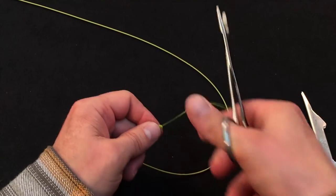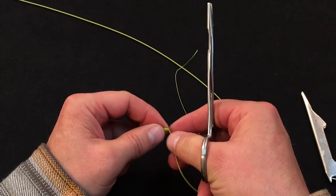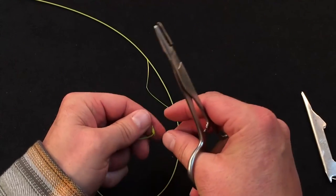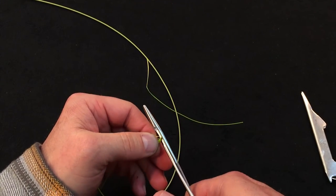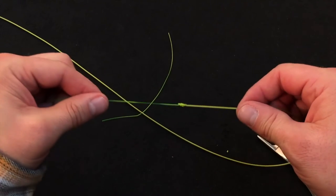We'll come back in, trim the tag off the butt, and trim the nub of fly line that's left, and there you have it.